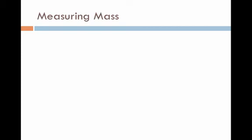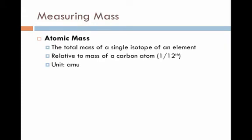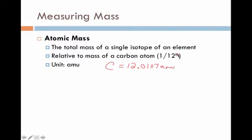Let's start by discussing some quick ways we keep track of the masses of a chemical compound. We've already talked about the idea of atomic mass — it is the total mass of a single isotope of an element. This mass is relative to a carbon atom, which is divided into 12 equal pieces to standardize the slightly different weights of protons and neutrons. Atomic masses are measured in atomic mass units, and a great example is carbon at 12.0107 atomic mass units.